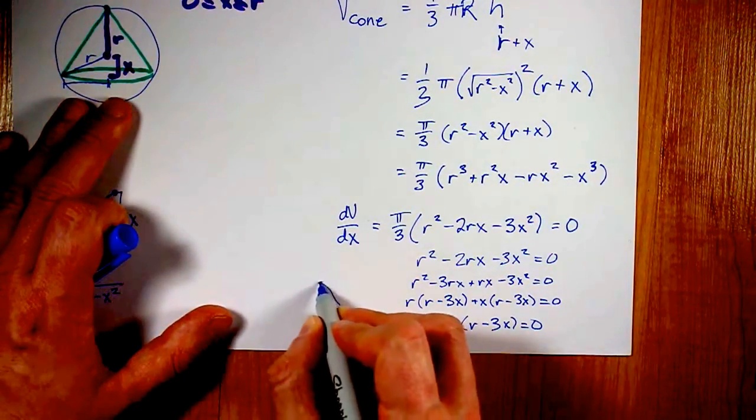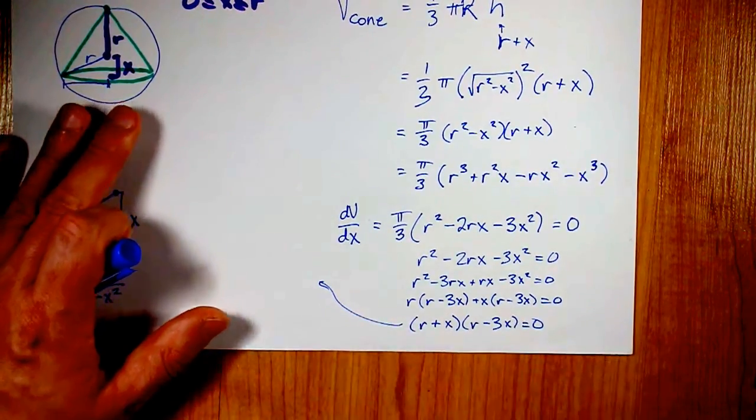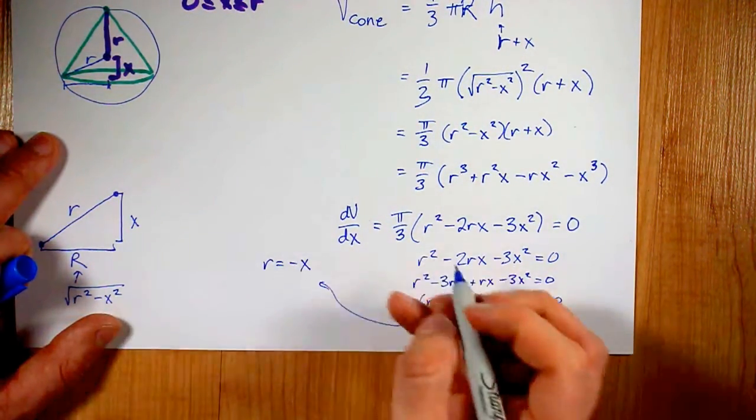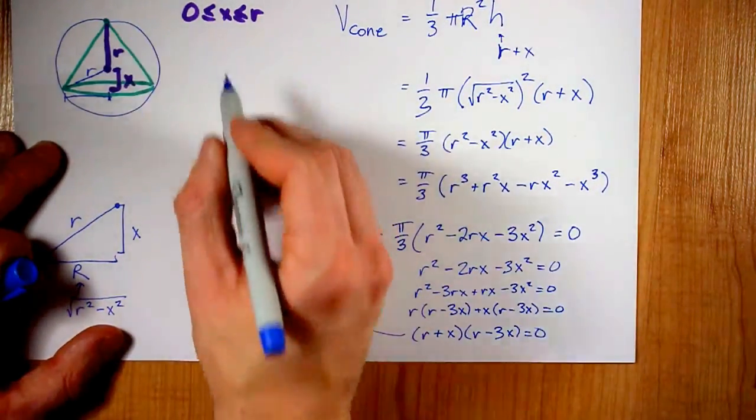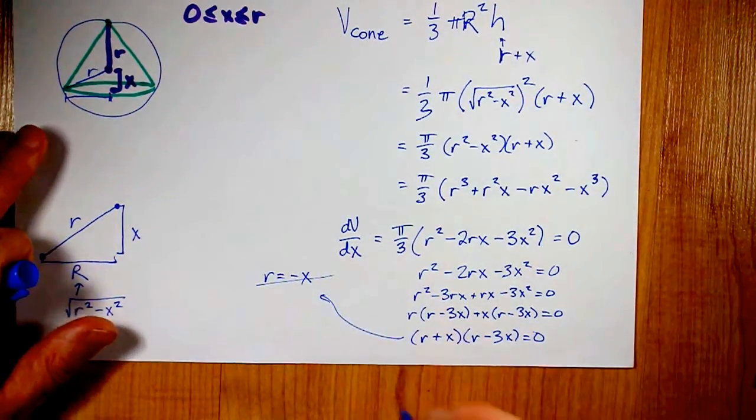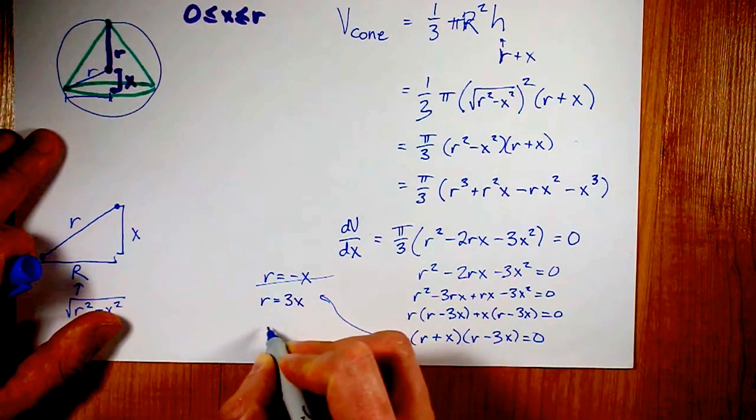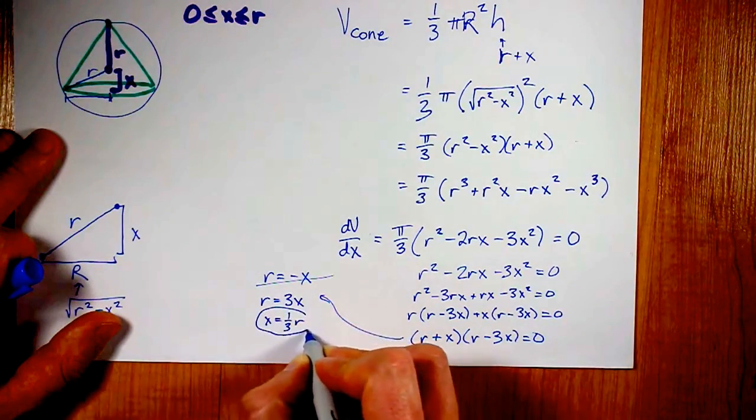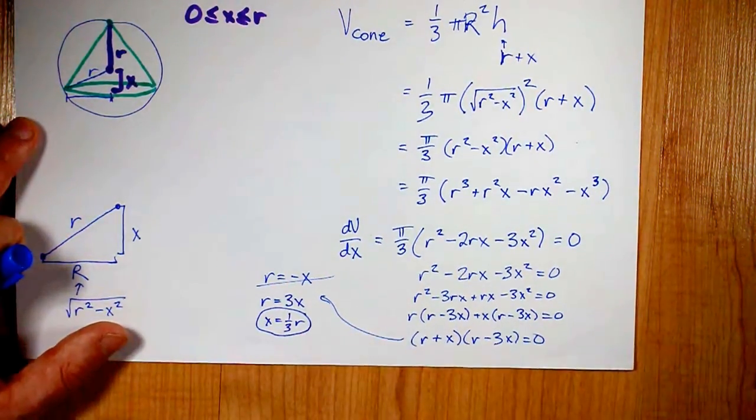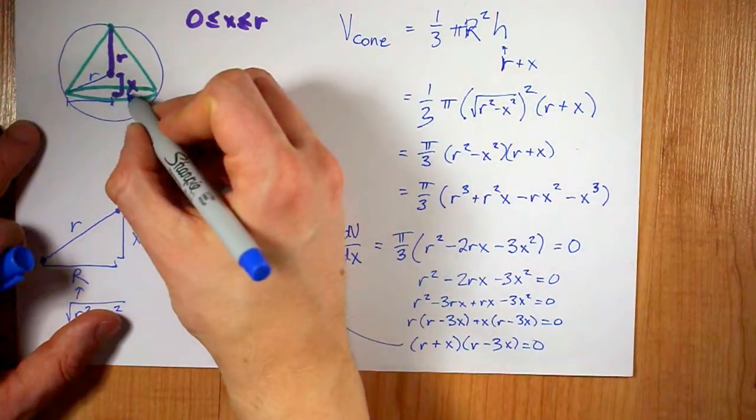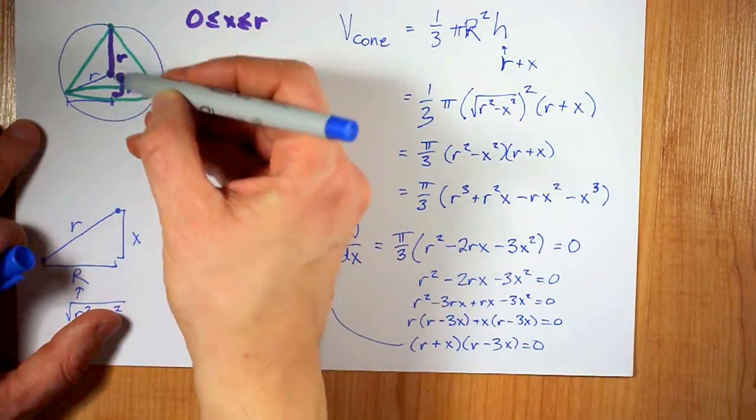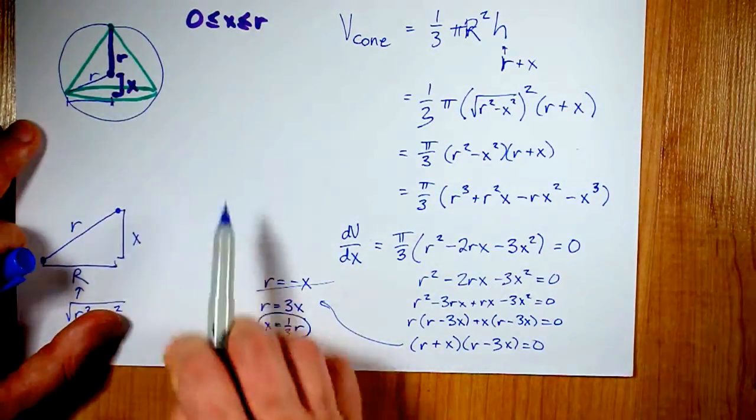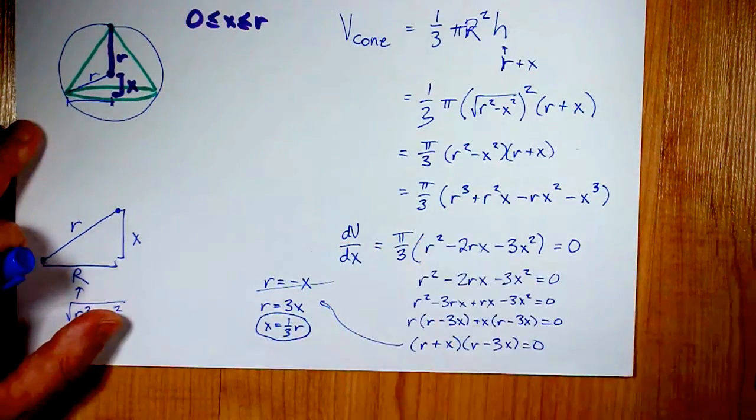That means that this is solved and the volume of the cone is maximized whenever r is negative x, but that's out of the domain. There's the domain. So, I don't care. Or when r equals 3x. Put another way, x is one-third of the radius of the sphere. That sounds right to me. Because, even in the cone that I drew here, x is some fraction of r. Apparently, the magic fraction that maximizes the volume of the cone is one-third of r. Cool!